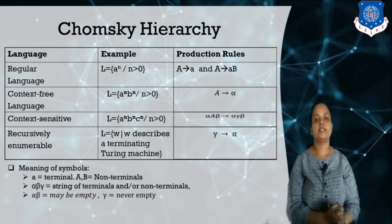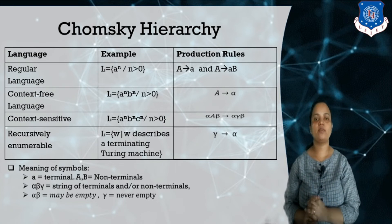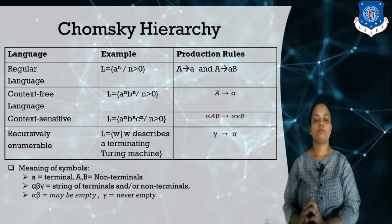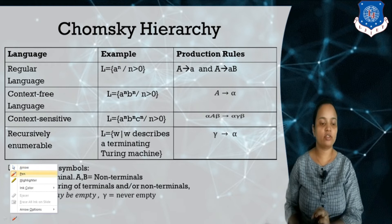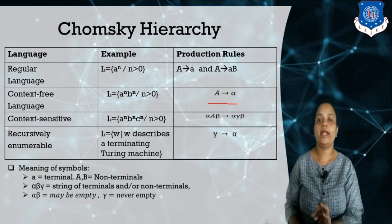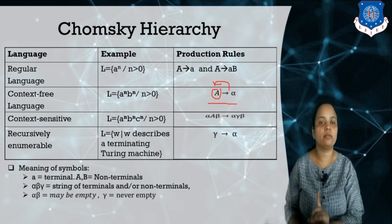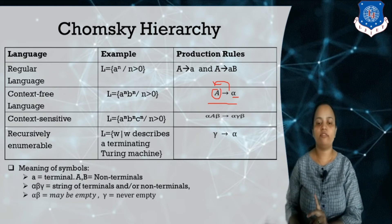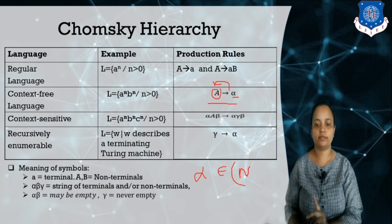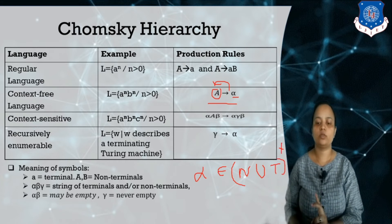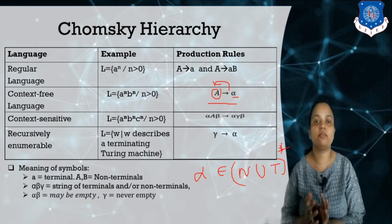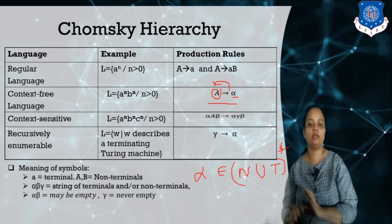Next is Type 2 grammar — context free languages. The example language is a^n b^n where n is greater than 0. The grammar for context free language follows the form A → alpha, where A is a single non-terminal on the left hand side. The right hand side alpha may contain the union of non-terminals and terminals, including empty strings — any combination of terminals and non-terminals.